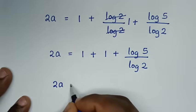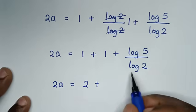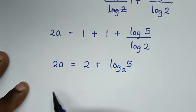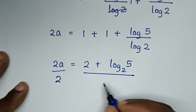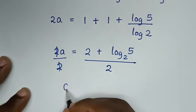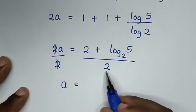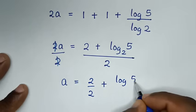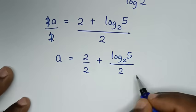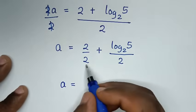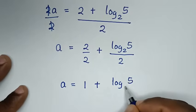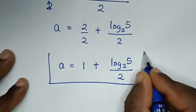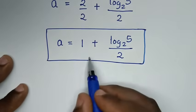So it will be 2a is equal to 2 plus log of 5 over log of 2, which is the same as log of 5 base 2. Then we will divide by 2 on both sides — this and this will cancel — giving a is equal to 2 over 2 plus log of 5 base 2 over 2, which simplifies to a is equal to 1 plus log of 5 base 2 over 2. This is the final answer. Now in the next step, let's check this answer if it is correct.